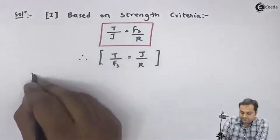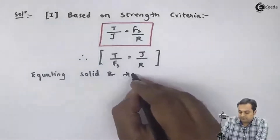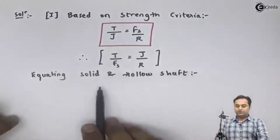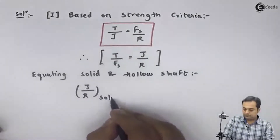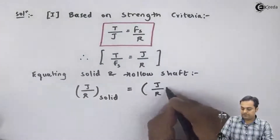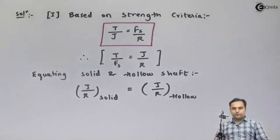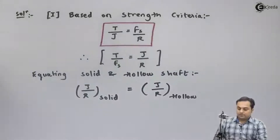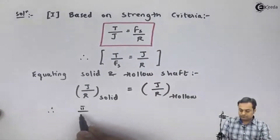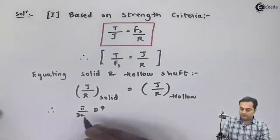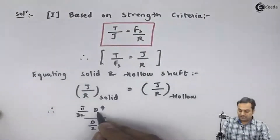Equating solid and hollow shaft: J/r for solid equals J/r for hollow. For the solid shaft, J = π/32 × Ds⁴, and r = Ds/2. For the hollow shaft, J = π/32 × (D⁴ − d⁴), and r = D/2. The ratio T/fs is the same since torque transmitted is the same for solid and hollow, and the shear stress value is the same.